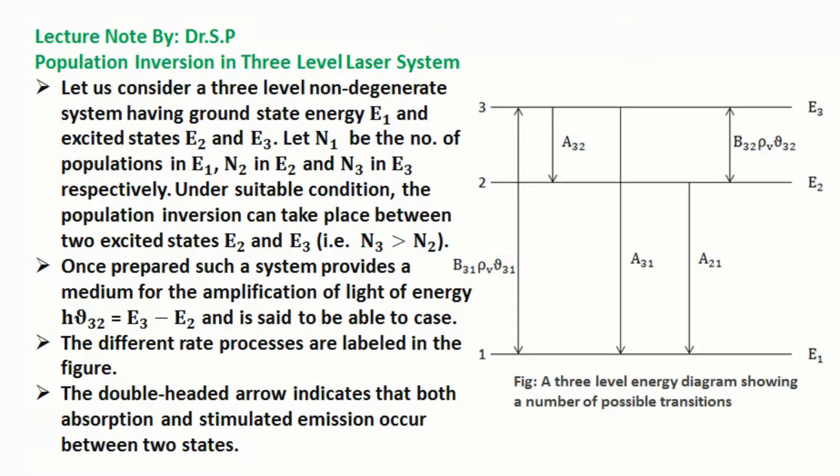Under suitable condition, the population inversion can take place between two excited states E2 and E3, that is, the number of atoms in the third energy state is greater than the number of atoms in the second energy state. Once prepared, such a system provides a medium for the amplification of light of energy hν32, that means transition from 3 to 2 equals E3 minus E2, and is said to be able to lase.